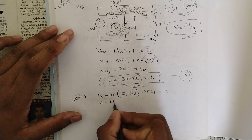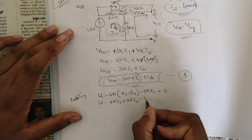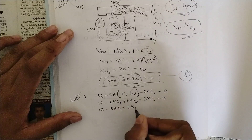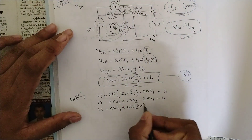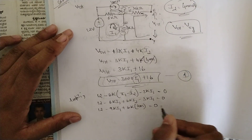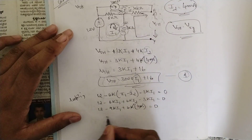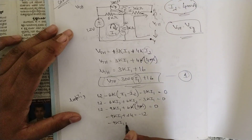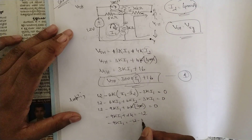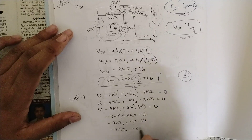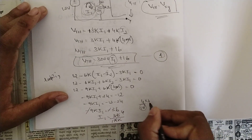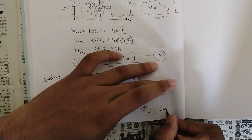Expanding: 12 − 6k·i1 + 6k·i2 − 3k·i1 = 0. Combining: 12 − 9k·i1 + 6k × 4mA = 0. Kilo and milli cancel: 12 − 9k·i1 + 24 = 0. Rearranging: −9k·i1 = −36, so i1 = 36 / (9k) = 4 / 10³ = 4 milliamps.